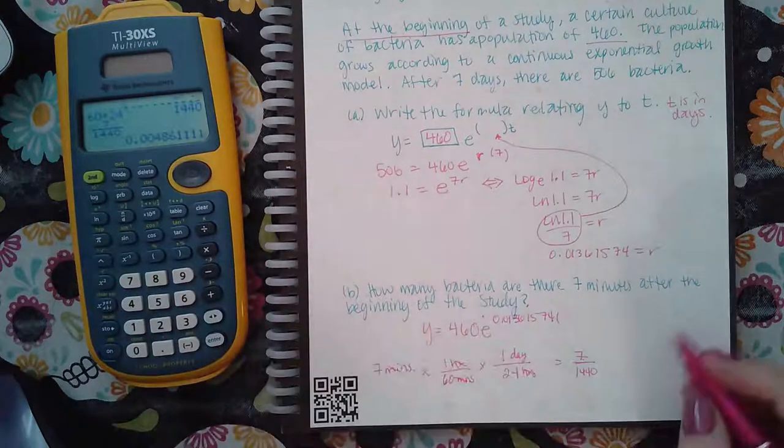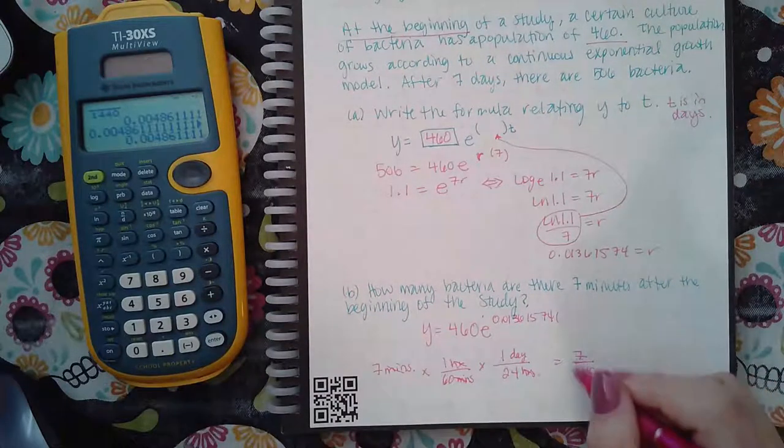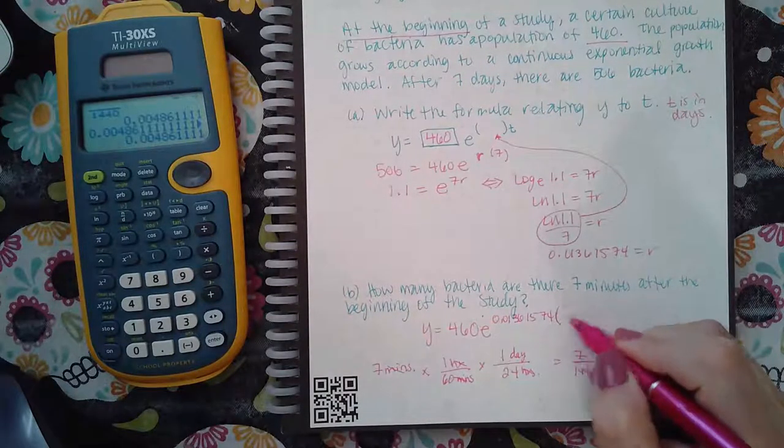And so then seven divided by, clear, seven divided by 1440. Does that just reduce? No, we'll just leave it like that then. So that's the number that's supposed to go in here.